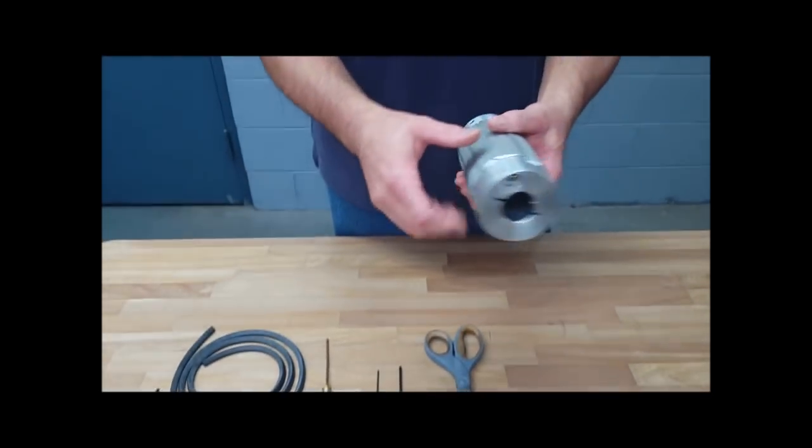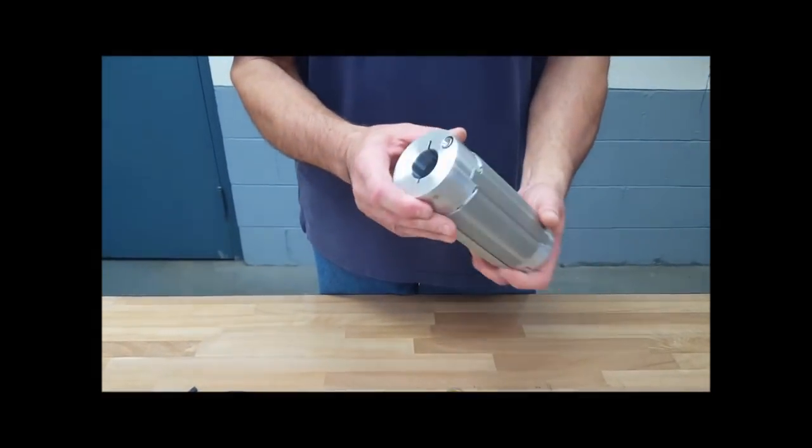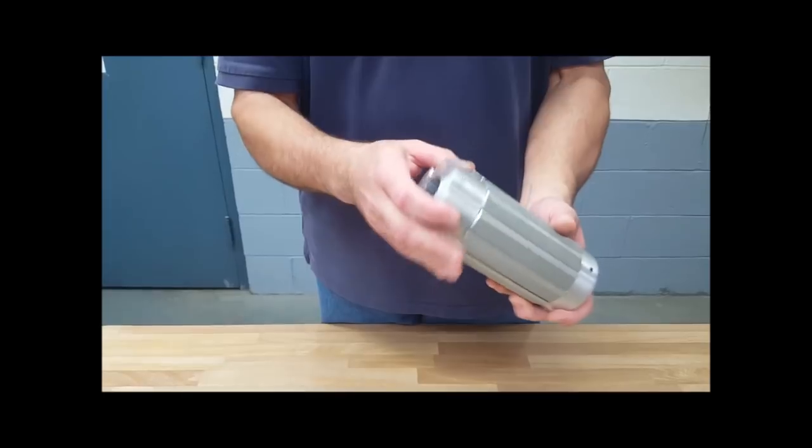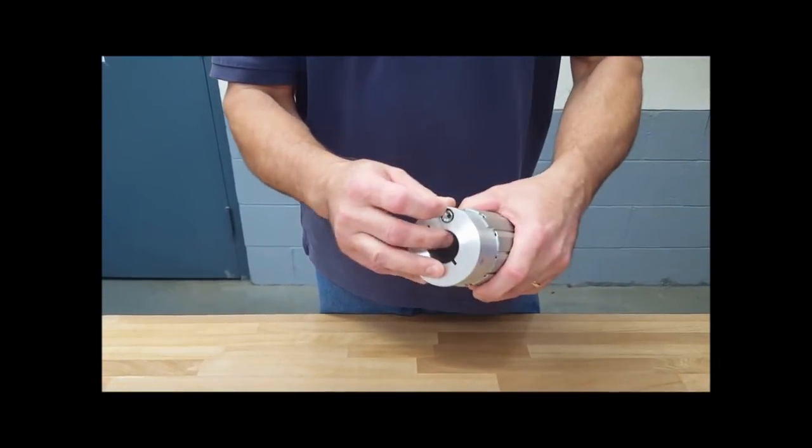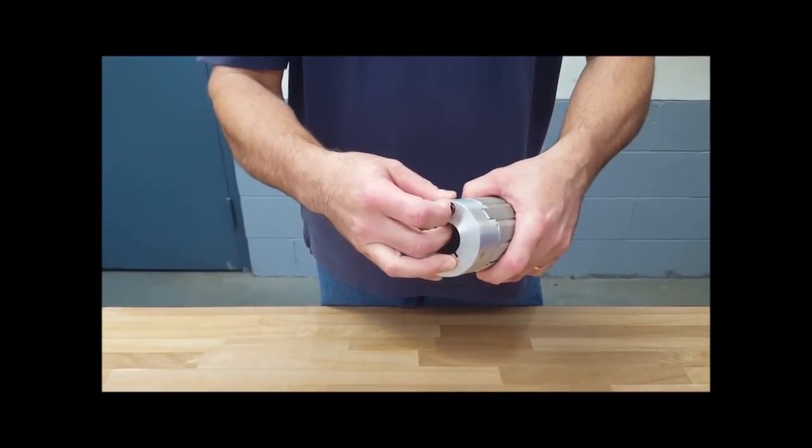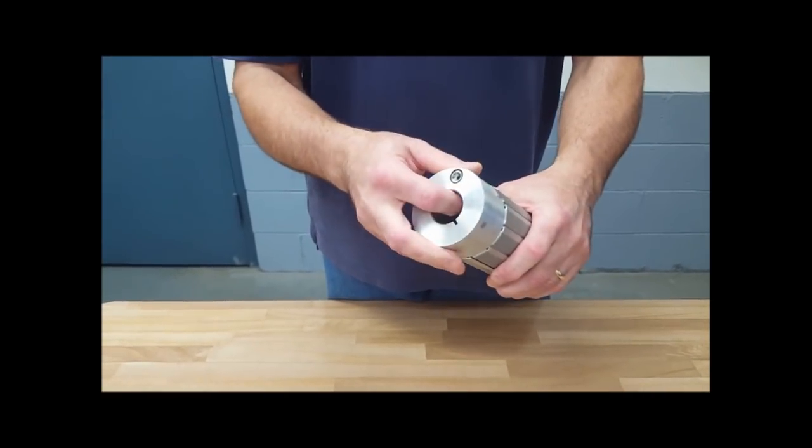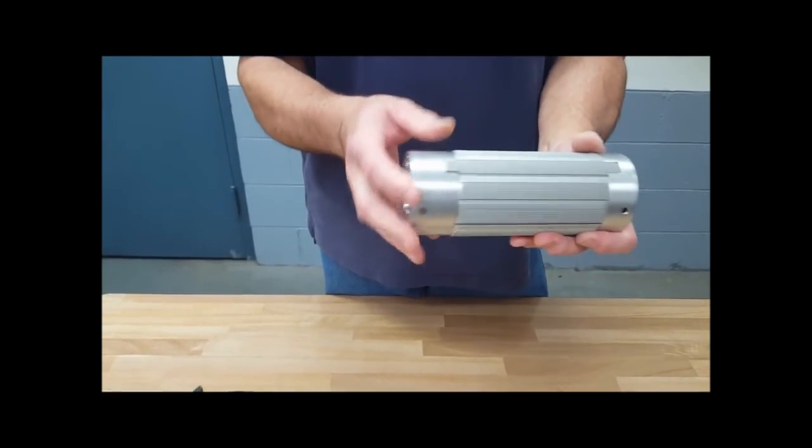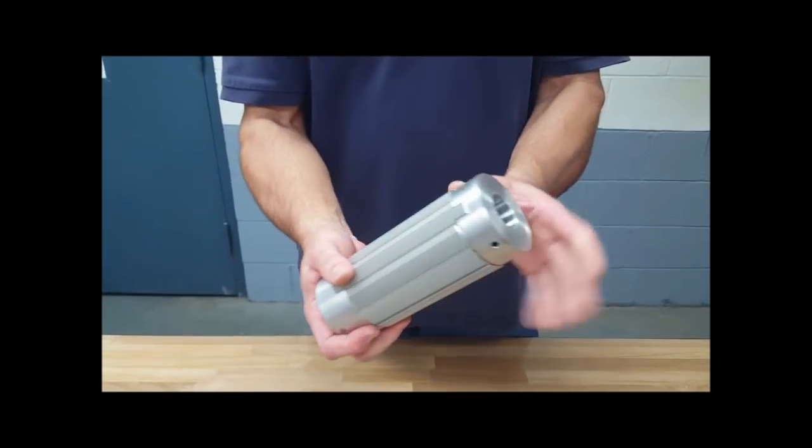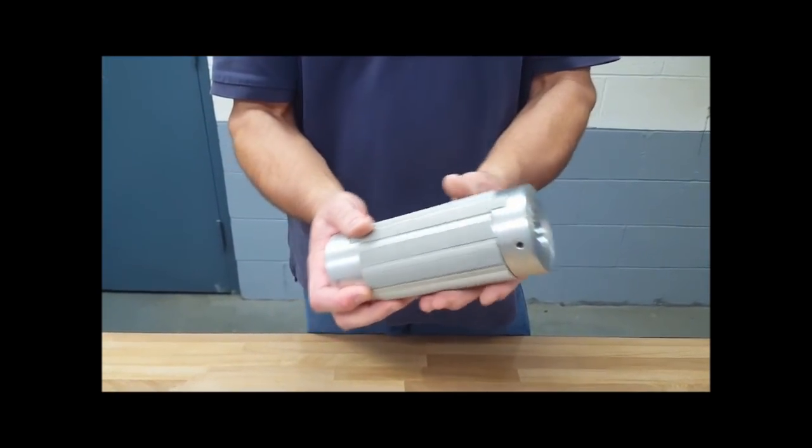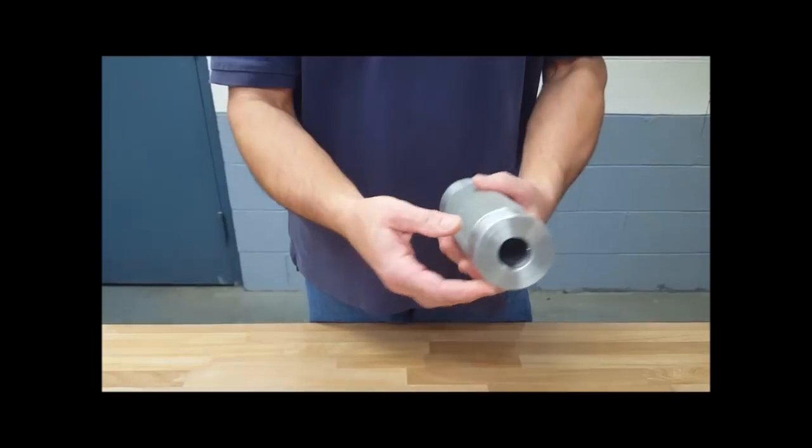We're going to begin with the disassembly. Make sure that the air, if there is any air in the chuck, is released. We release the air on the valve end of the chuck, and this is your plane end of the chuck, which we're going to remove. It has 3 set screws.